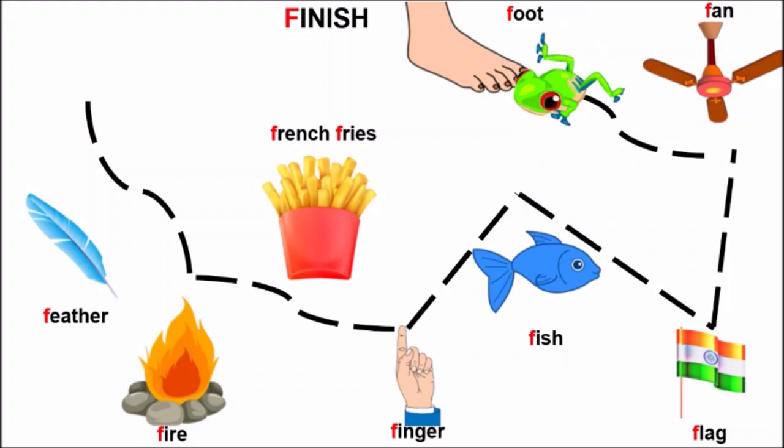What is this, children? Foot. F for foot. When we talk about one, say foot. But when we talk about two, then we say feet. F for feet. F for foot.